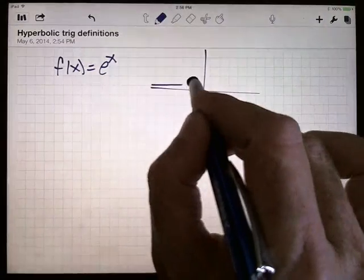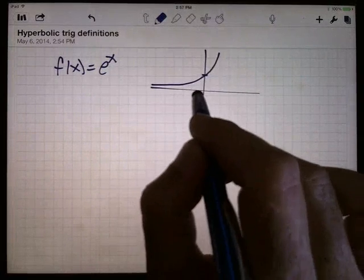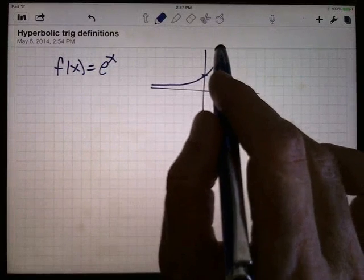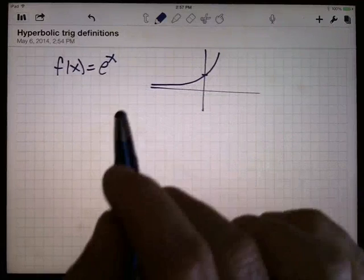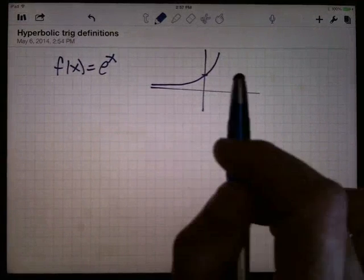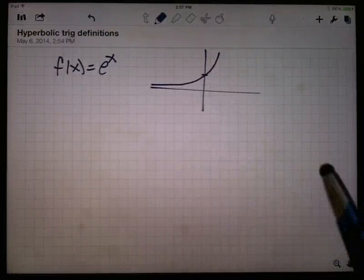The graph of it looks like this, goes to the point (0,1), goes up kind of fast on the right, kind of horizontal asymptote of 0 on the left. It's not symmetric about the y-axis, it's not symmetric about the origin.